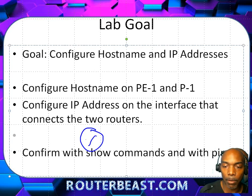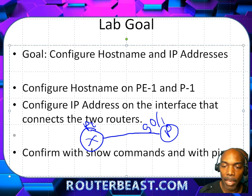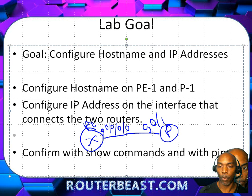On the PE router and the P router, we've got a connection here. The PE side is going to be GigabitEthernet 0/0/0/0 and the P side is going to be GigabitEthernet 0/1. You'll see that as we do the configuration moving forward.